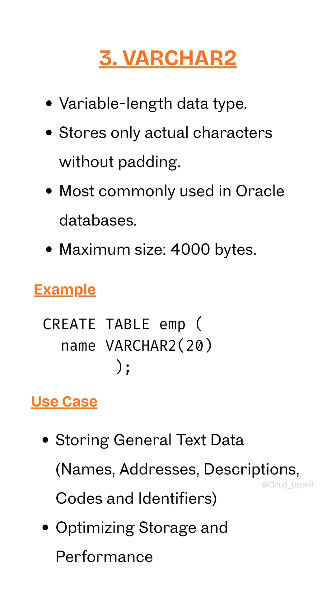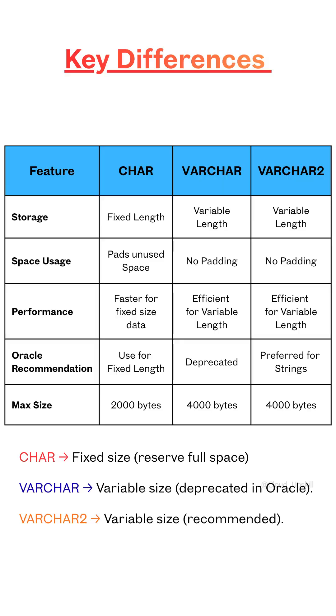VARCHAR2 is also a variable-length data type. It stores a maximum size of 4000 bytes and stores actual characters without padding. The key differences are mentioned here — you can watch it on screen.